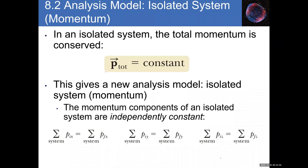Just as we learned conservation of energy in the previous chapter, conservation of momentum is equally important and can be applied in physics, astronomy, and engineering. Like conservation of energy, it requires a system. For an isolated system, the total momentum is conserved — meaning the total momentum of the system before and after any interaction remains constant.